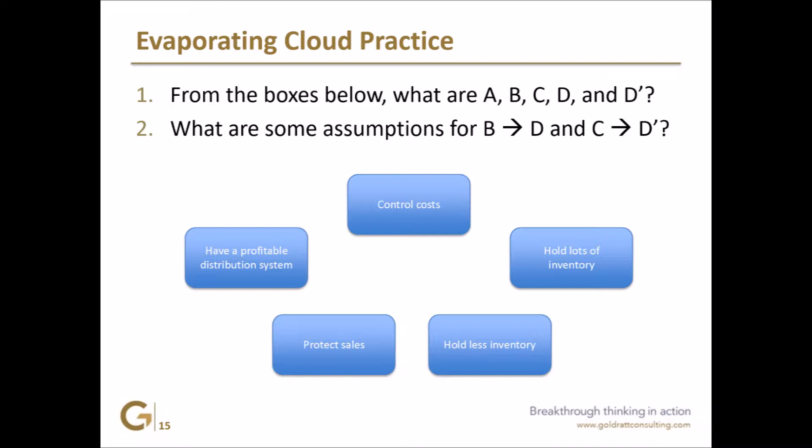How about the other side? We can do both sides. In order to protect sales, we must hold lots of inventory because demand is difficult to predict. That's one. If demand is fluctuating, we want to make sure we have enough safety stock to make sure we don't run out.